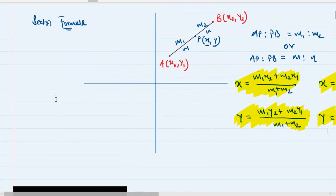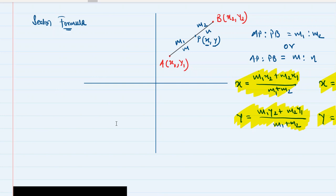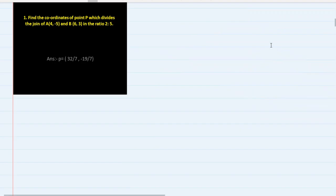Section formula is all about finding the coordinates of the point which divides the line segment joining two given points in a given ratio. It is possible that you need to find coordinates, or you may need to find the ratio if it is missing, or you may need to find the coordinates of an endpoint. We will take many questions of different types — some from your textbook and some outside it — but all are section formula questions.